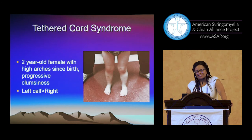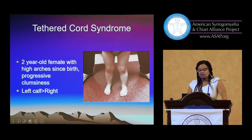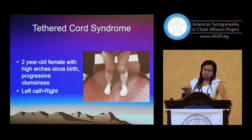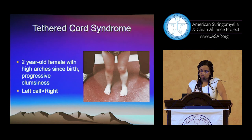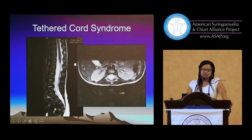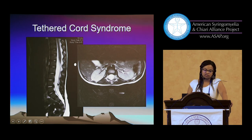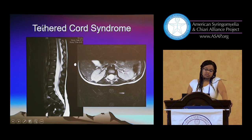This little girl had high arches and progressive clumsiness. The left calf is bigger than the right. Progressively increasing high arches and hammer toes that progress over time are very suggestive of tethering and spinal cord involvement. Her MRI confirmed tethering. Notice that most of our occult dysraphism — most of our occult tethered cords — will not have a low-lying conus. Accordingly, a lot of these will not be read as tethered by radiology. But you have to look at these subtle findings; it's really a clinical decision.